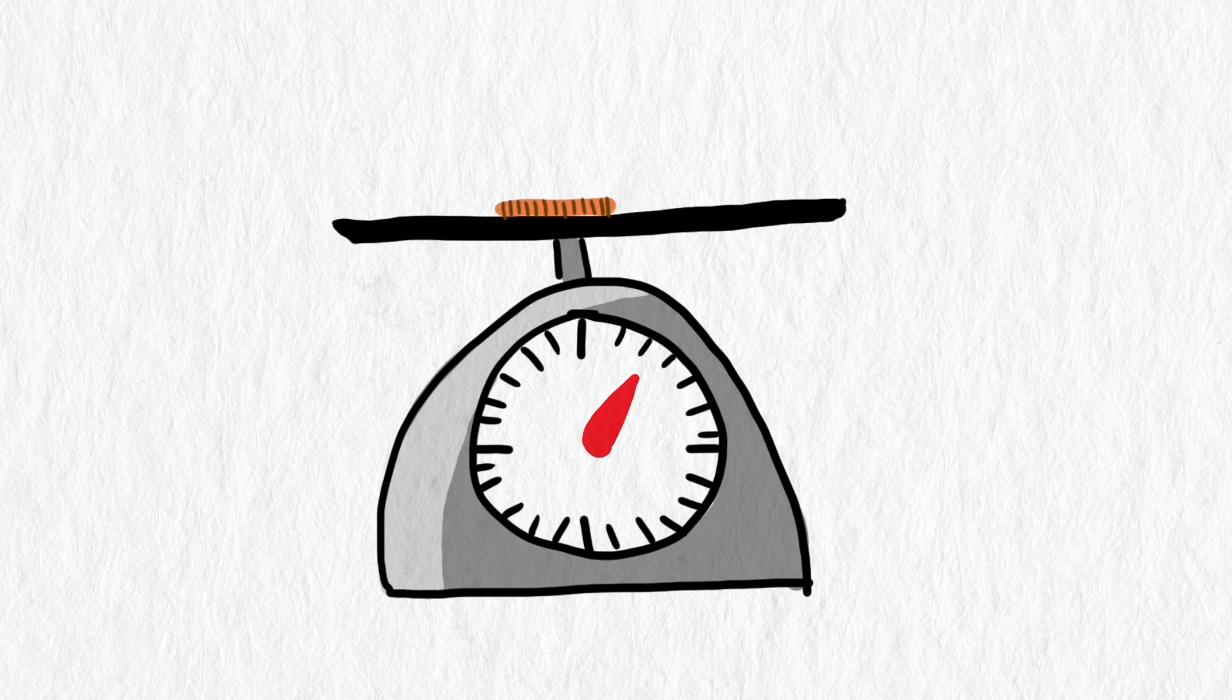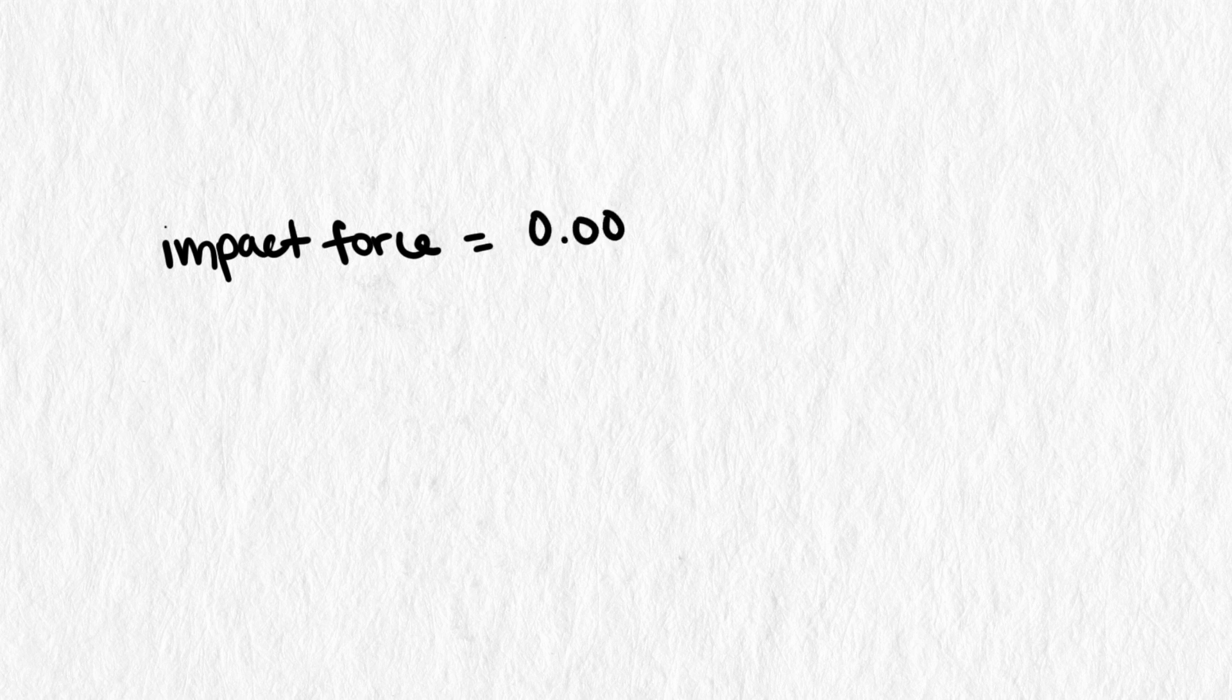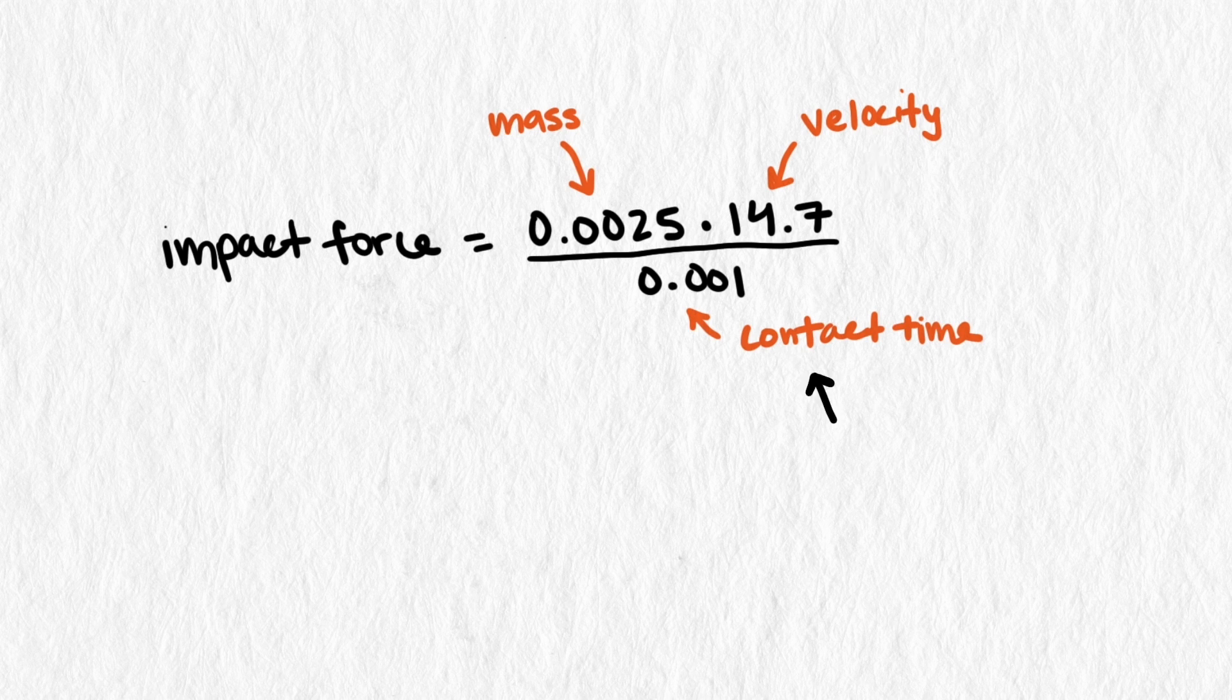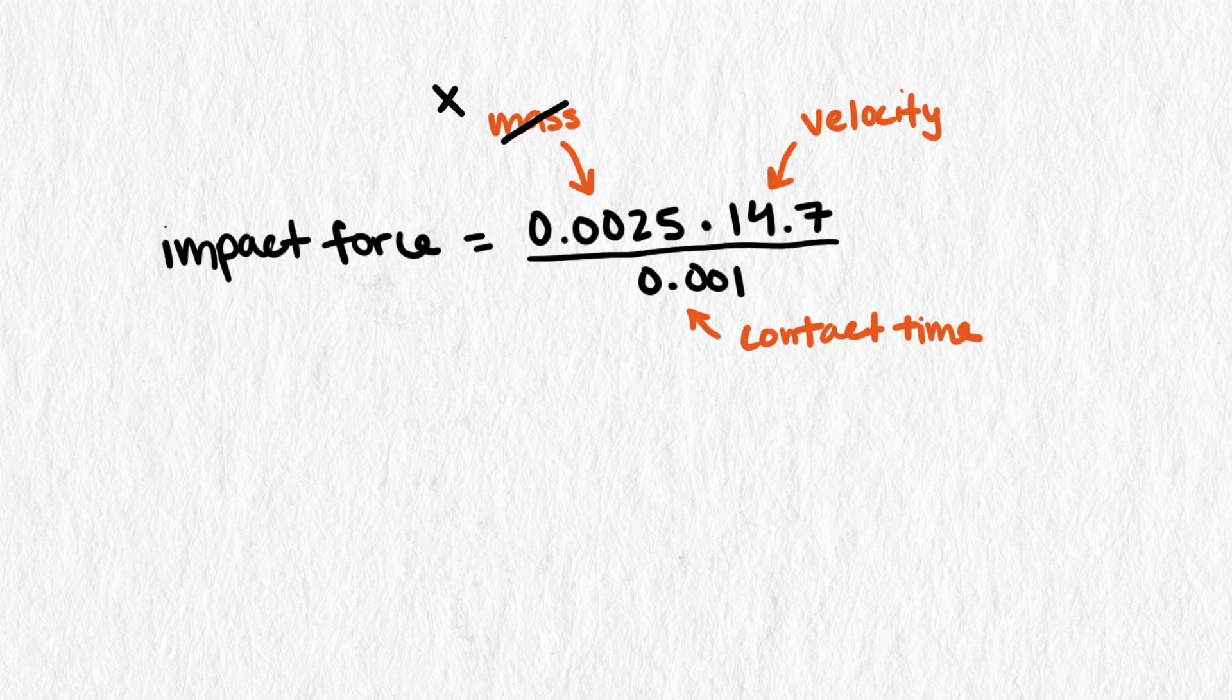But what if our penny had more mass? What would its mass have to be to become lethal? This is a pretty simple exploration. We can take our formula for impact force that we used before. We need mass, velocity, and contact time. The velocity and contact time will stay the same, and we can replace our mass with a variable, say x, and solve for x.